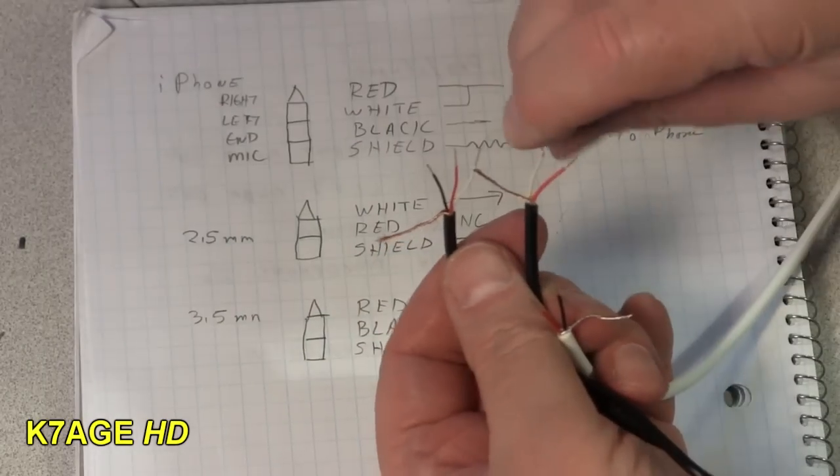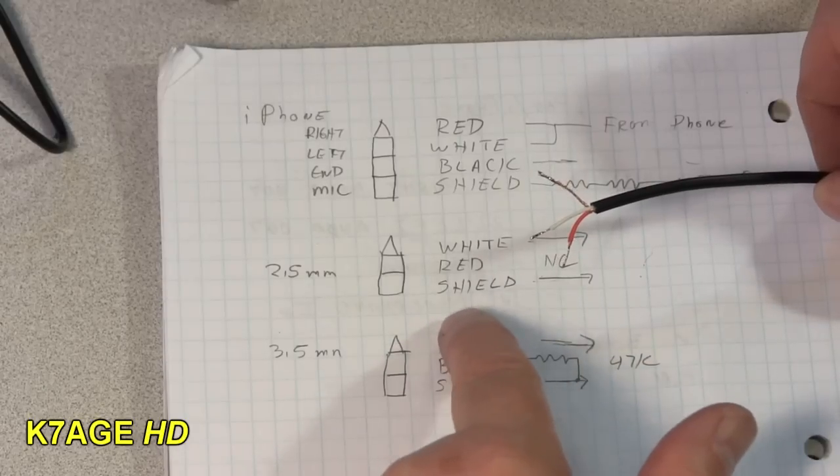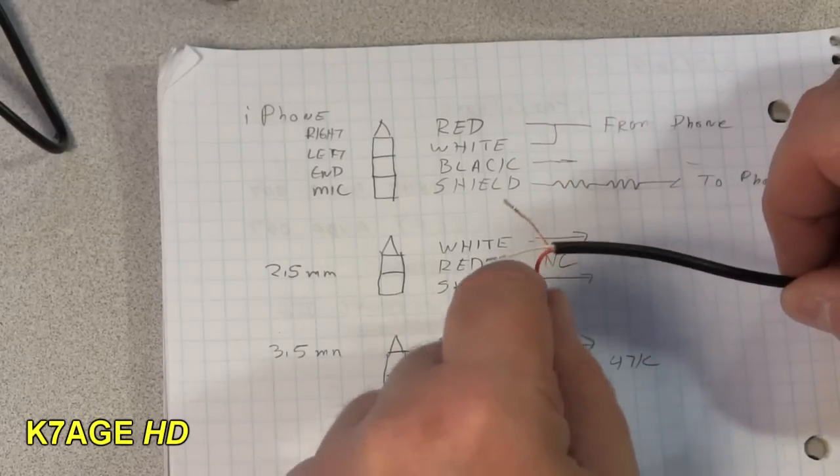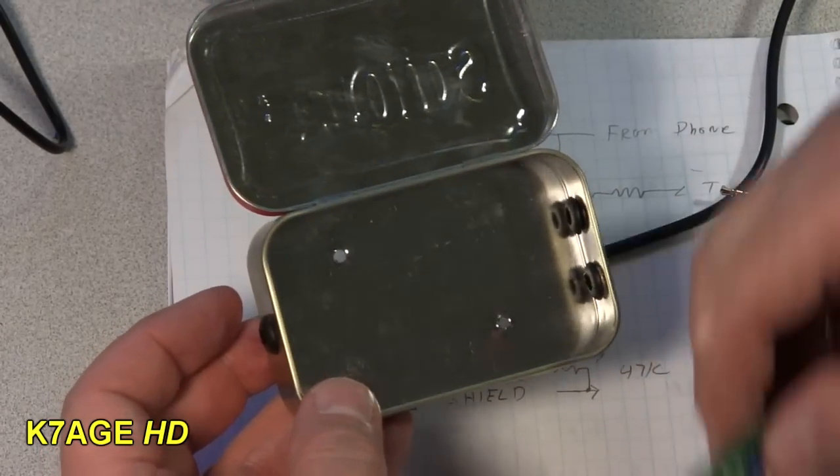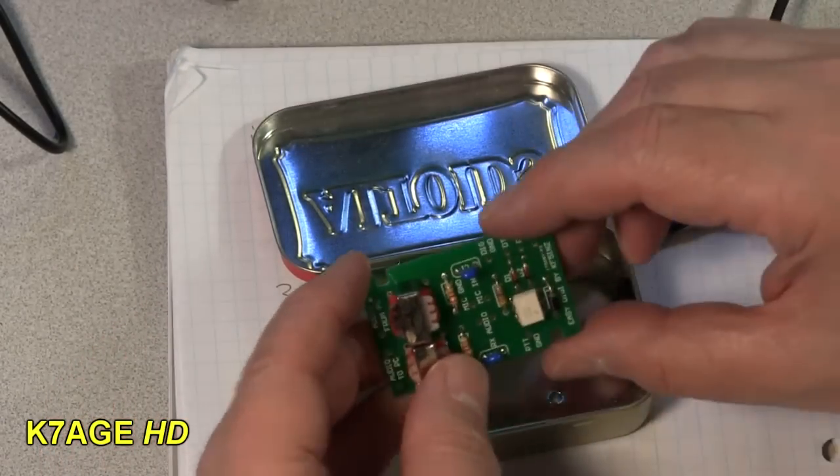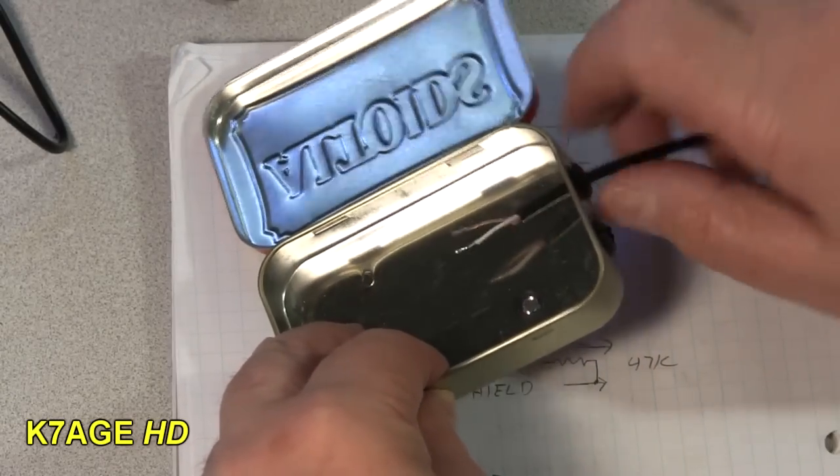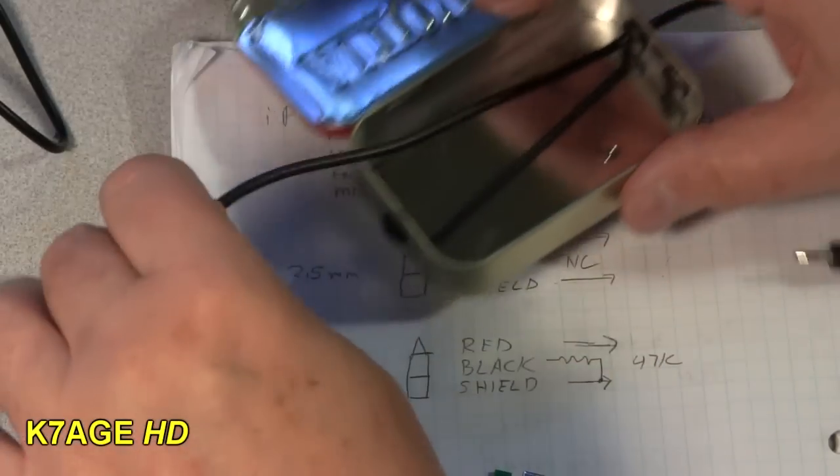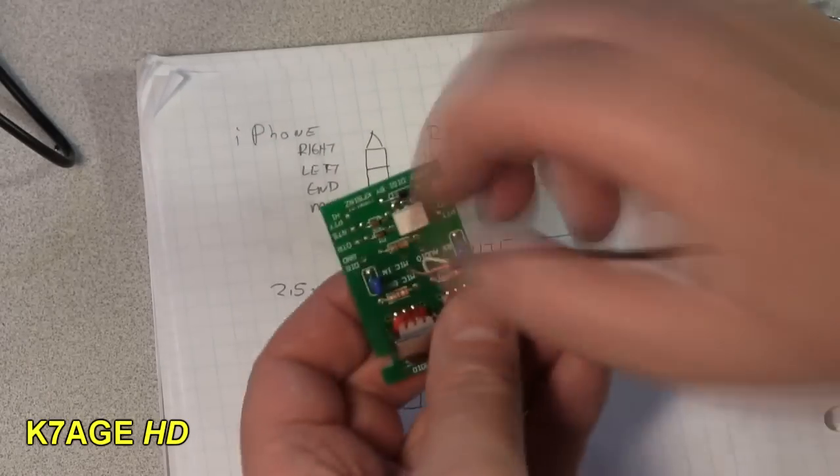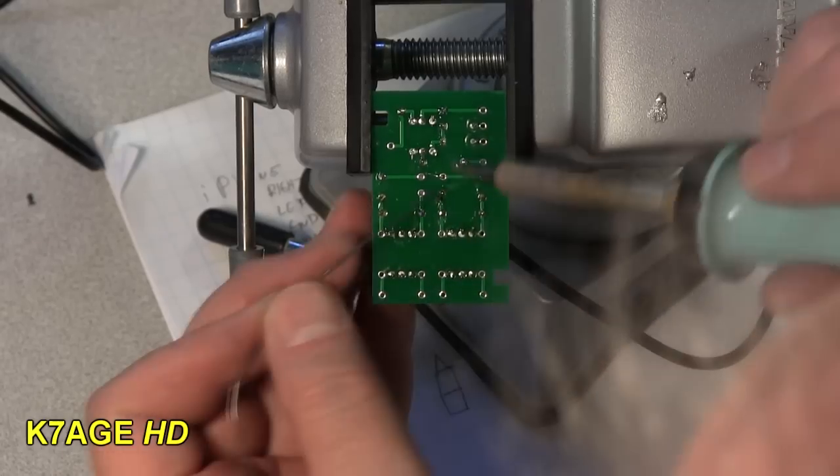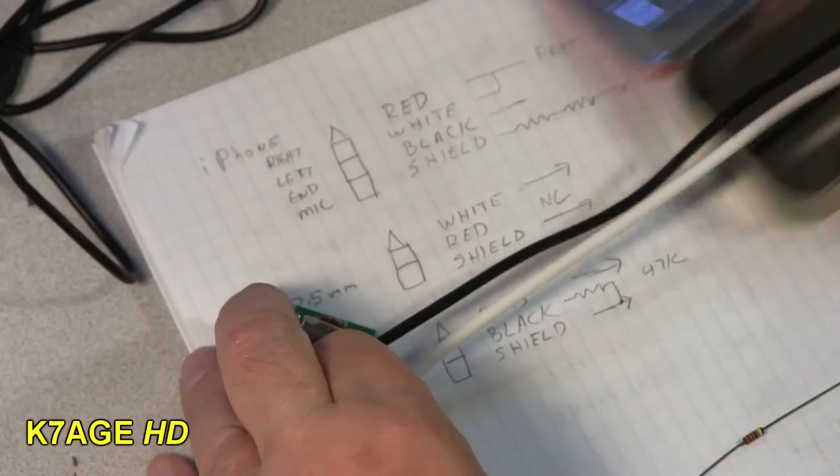I've got all my cables fabbed up here. I'm going to start with the 2.5 millimeter. I need the white wire and the shield but not the red wire. The board's going to sit in here like that and connect to this upper side. The number one thing to not forget is to pass the wire through the grommet. This cable goes to the mic in.